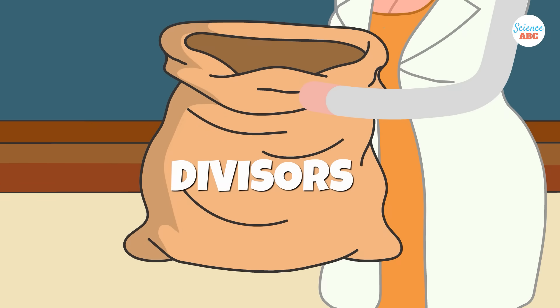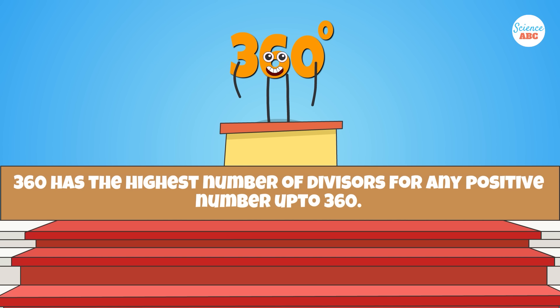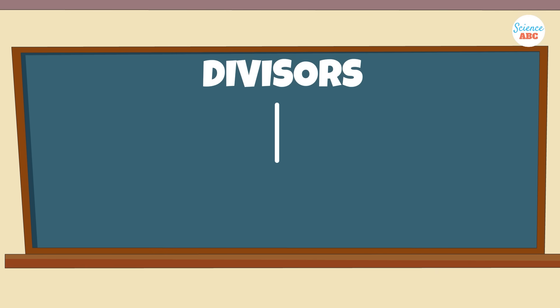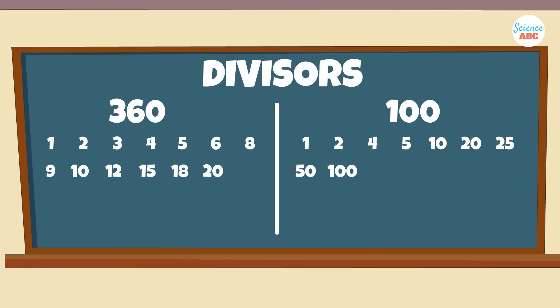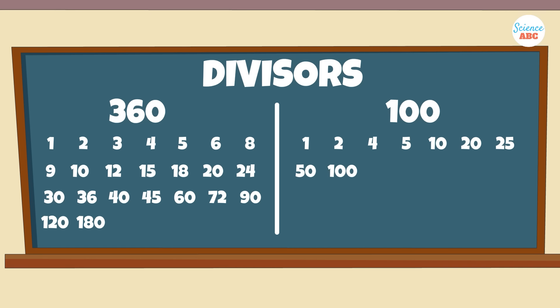This is the highest number of divisors for any positive whole number up to its own value of 360. For example, the number you might assume would be most convenient for the full circle, such as 100, has only 9 divisors.